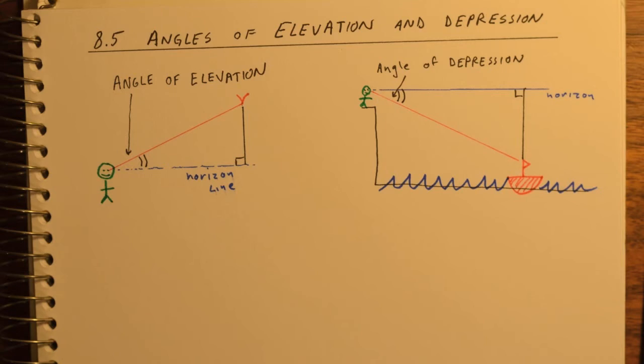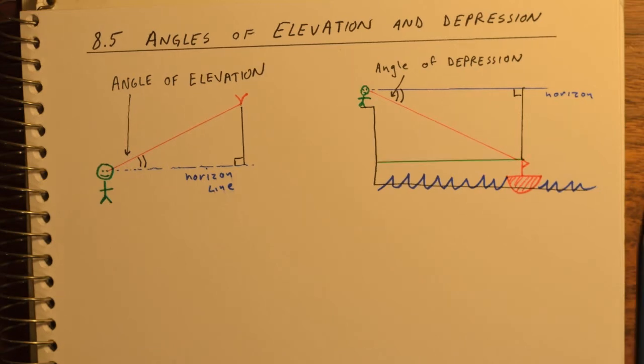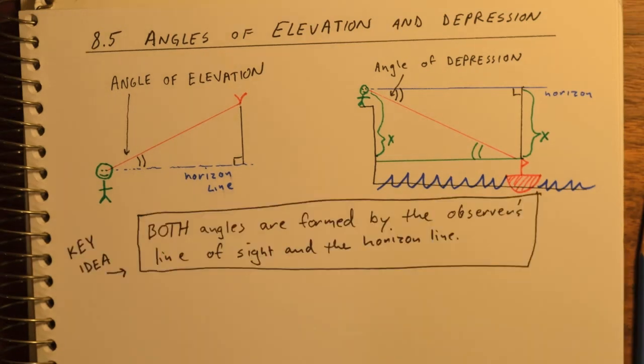In addition, the triangle below that given triangle is also a right triangle. And by alternate interior angles, the angle of depression is congruent to that green angle shown there. We could solve for x using trigonometry. The key idea with both angles of elevation and depression is that they are formed by the observer's line of sight and the horizon line.